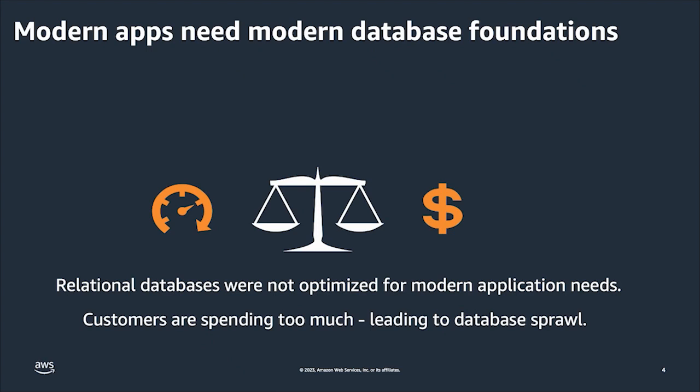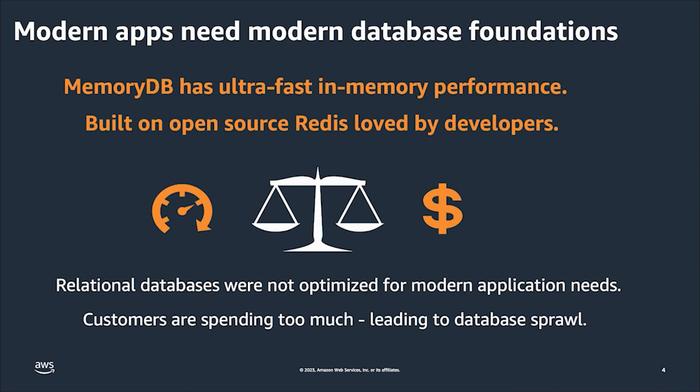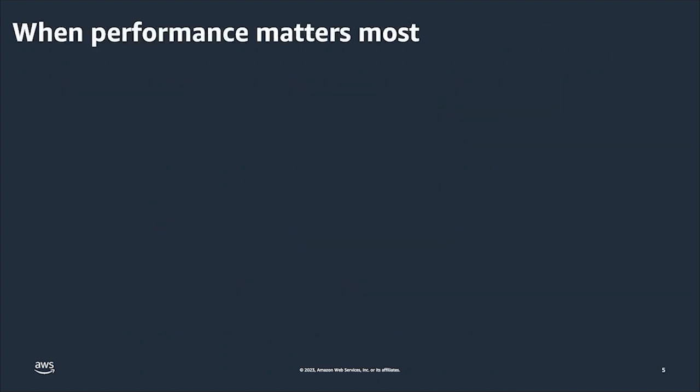What I want to relay is that MemoryDB has ultra-fast performance because it's all in memory on a chip. And importantly, it's built on open-source Redis, an extremely popular and flexible application development environment loved by developers and builders. To summarize, MemoryDB is about speed and fully managed Redis, which can simplify your evolving microservices architectures and even manage them. So where is MemoryDB ideal? When performance matters most.